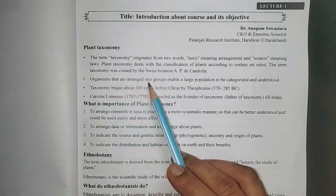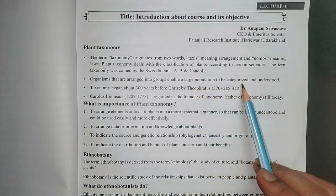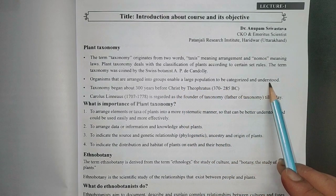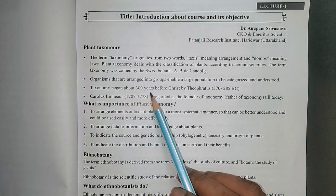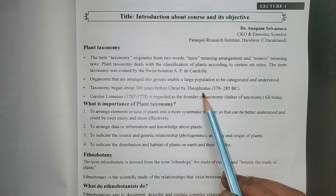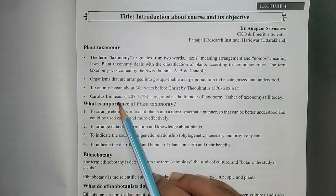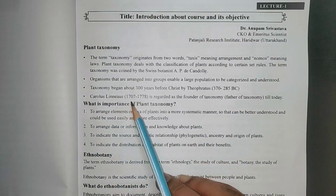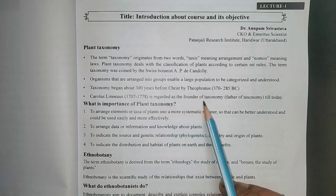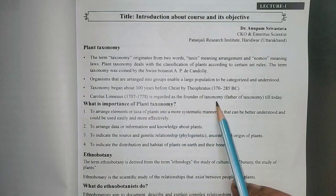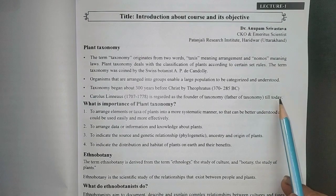Organisms that are arranged into groups enable a large population to be categorized and understood. Taxonomy began about 300 years before Christ by Theophrastus. Carolus Linnaeus (1707–1778) is regarded as the founder of taxonomy, meaning father of taxonomy, till today.